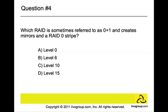Question number four. Which RAID is sometimes referred to as 0 plus 1 and creates mirrors and a RAID 0 stripe? Is it level 0, level 6, level 10, or level 15? The answer is C, level 10. This particular RAID provides high availability by combining the features of RAID 0 and RAID 1. RAID 0 increases performance by stripping volume data across multiple disk drives, and RAID 1 provides disk mirroring between two disk drives. RAID 10 provides a second optimization for fault tolerance.